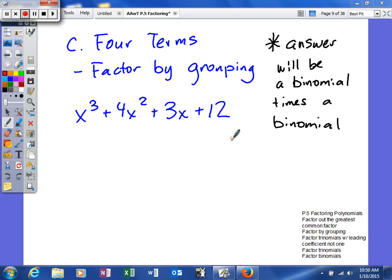Now, one important thing to know is kind of where we're trying to go. So when you factor by grouping, our answer will be a binomial times a binomial. So keep that in mind because if you don't know where you're trying to go, you may stop a little bit too early and not actually get our correct answer.